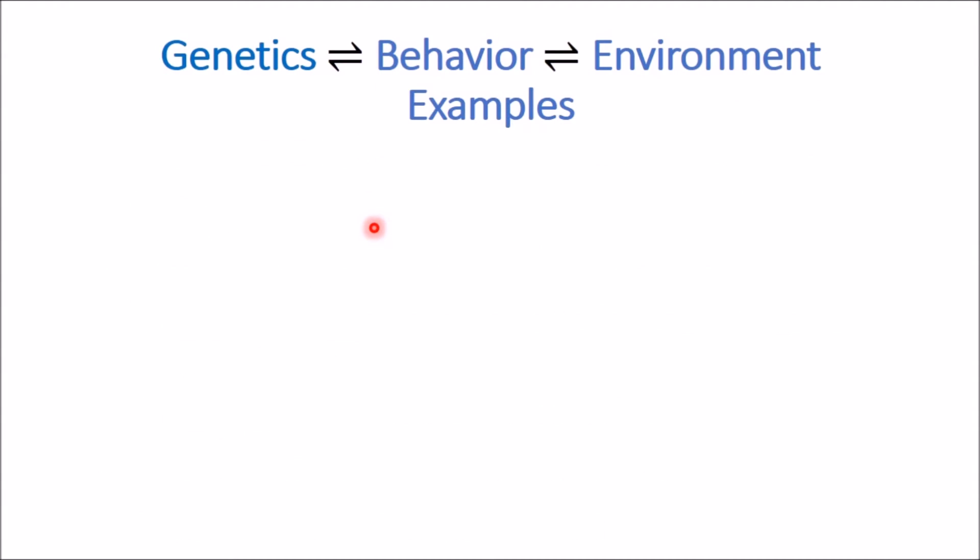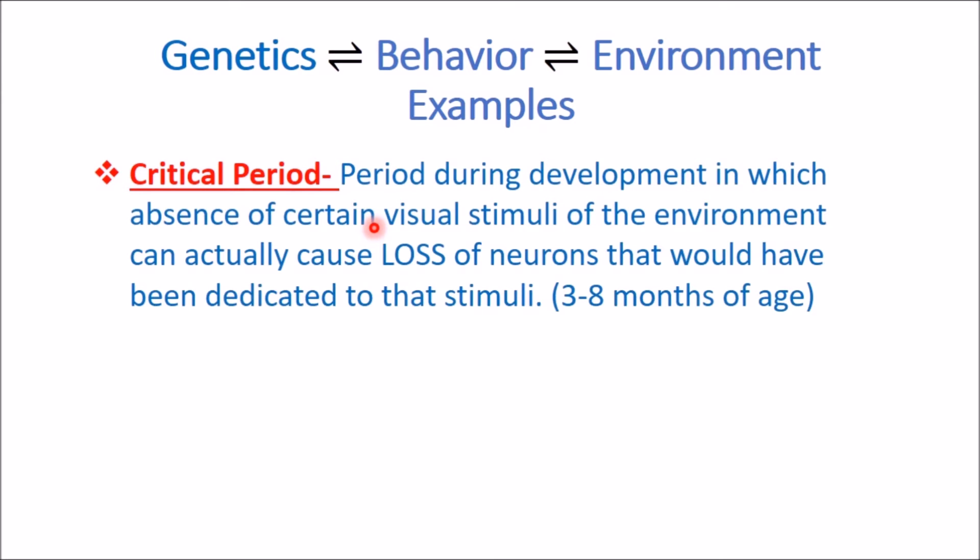I'm going to go through a few examples you have to know for the MCAT — anytime I give an example, it's because you need to know it. The critical period is a period during development in which the absence of certain visual stimuli from the environment can actually cause loss of neurons that would have been dedicated to that stimuli. This happens between three and eight months of age. If a baby is not given certain visual stimuli, they will not develop the neurons they would have developed had they been exposed to that stimuli.